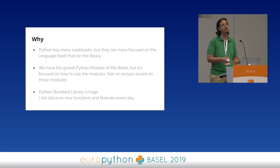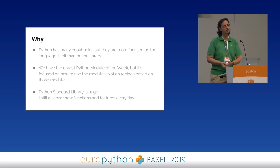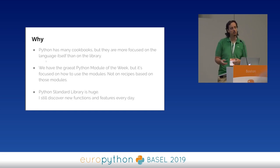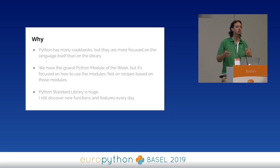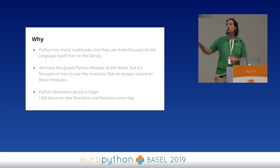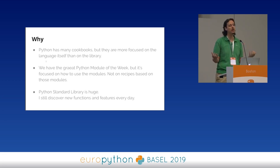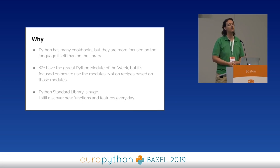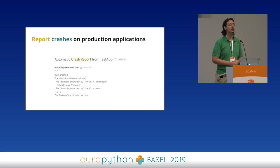Existing documentation sources try to focus on how you can use modules and how they work — they act more like a reference when you already know those modules exist. They are not a convenient way to discover new modules or corner cases. The Python Standard Library is really huge; I still discover new features every day after 15 years of use. There was recently a proposal to reduce the number of modules because the maintenance burden is unmanageable, so sadly it's going to shrink. But it still has some very cool hidden gems I want to share with you.